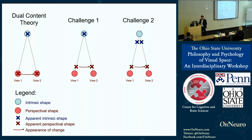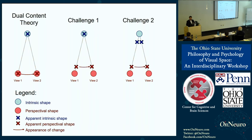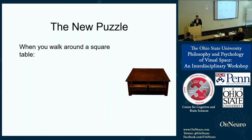More germane for our purposes is the second challenge, which says there's some distortion in the appearance of intrinsic properties — some regression towards the retinal. That's why the blue crosses are intermediate between real size and perspectival size. And here's the really important thing: as your viewpoint changes, moving from view one to view two, there's variation not only in the appearance of perspectival properties but also in the appearance of intrinsic properties.